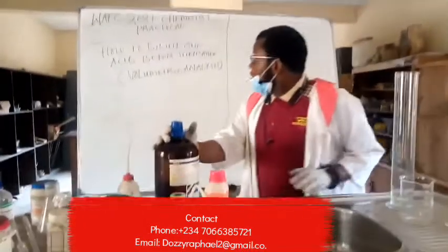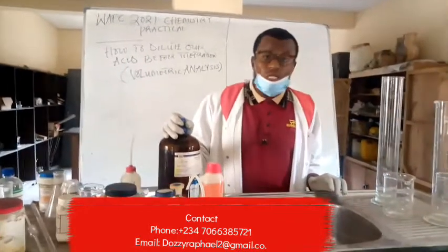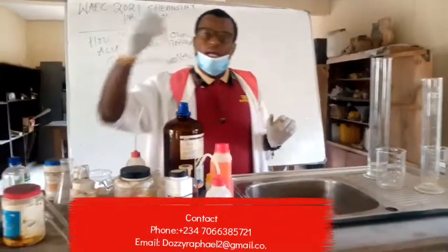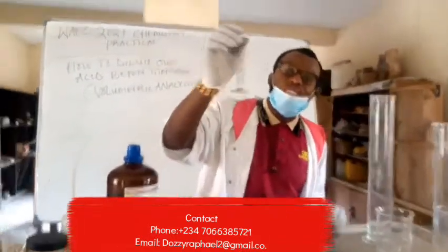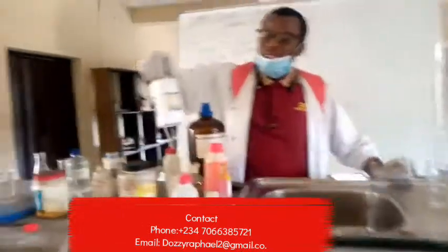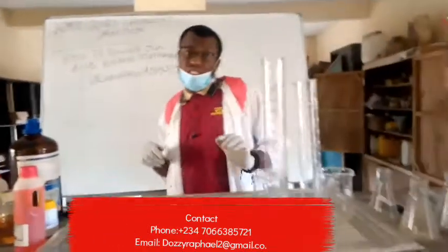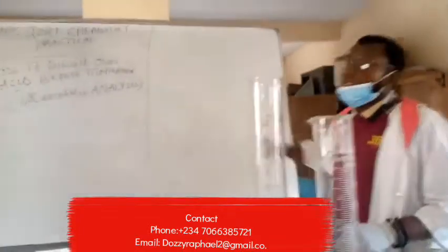Today we'll be looking at how to dilute our acid. This is our concentrated HCl — highly concentrated. This is my plastic water, and this is my measuring cylinder, calibrated from 2 to 10 ml. This is my copper sulfate — that is for the salt, that is for C. We're looking at A, B, and C.